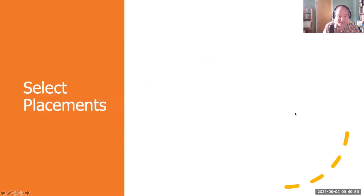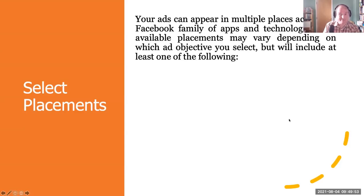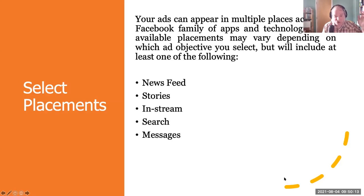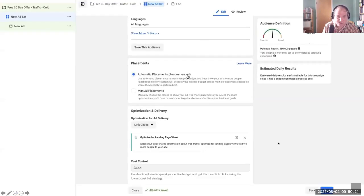Scroll down a little bit more and we'll get to select placements. Your ads can appear in multiple places across the Facebook family of apps and technologies. The available placements may vary depending on which objective you select, but they'll include at least one of the following: news feeds, Facebook stories, in-stream, search, messages, articles, or apps and sites.